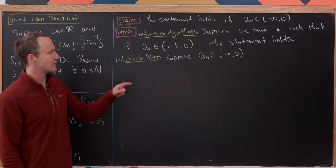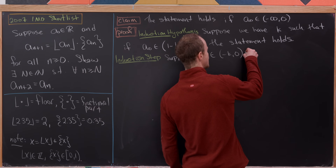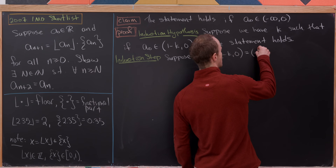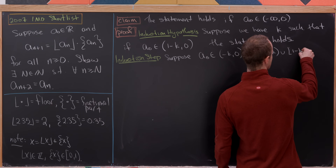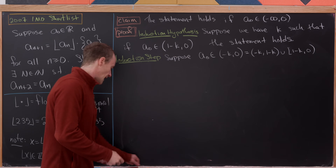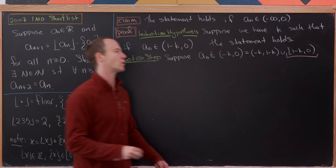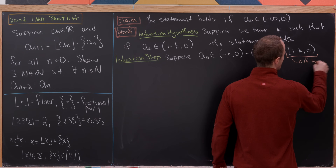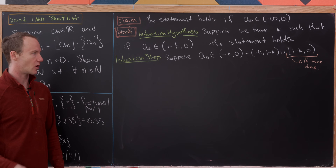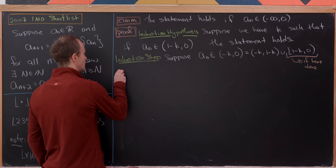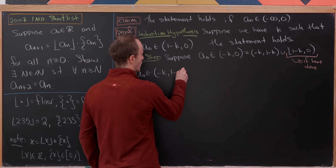For the induction hypothesis, suppose that for some k, if a₀ starts in (1−k, 0), then the statement holds — the sequence eventually becomes 2-periodic. For the induction step, suppose a₀ ∈ (−k, 0). We decompose this as (−k, 1−k) ∪ [1−k, 0). If a₀ lands in [1−k, 0), we're done by the induction hypothesis (or because it's an integer).